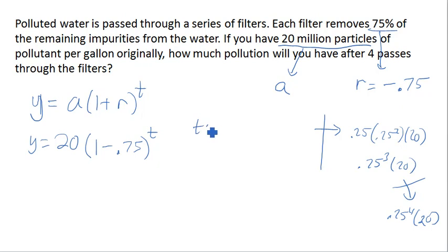And in this case, T is not representing time, but T is representing number of filters, number of filter passes. Each time we pass through a filter, it removes 75% of the contaminants.